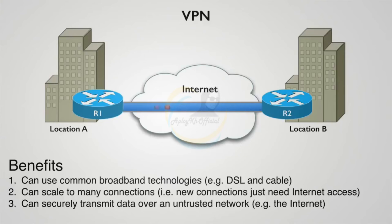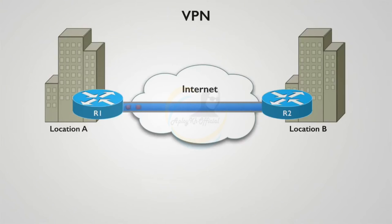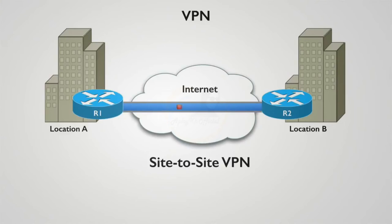Cisco gives us two broad categories of VPNs. The first is a site-to-site VPN, where routers or adaptive security appliances at each location act as the VPN endpoints. This connection is completely transparent to the end user — no special VPN client software needs to be installed on PCs. The router encrypts the traffic and sends it through a VPN tunnel to the router at the other site.